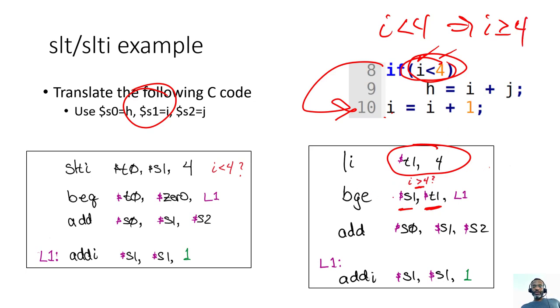So this branch happens when line 8 is false. And if line 8 is false, then we just want to go straight to the addition here. And that's what this does. It goes straight to the addition of i equals i plus 1. Otherwise, do the standard h equals i plus j.